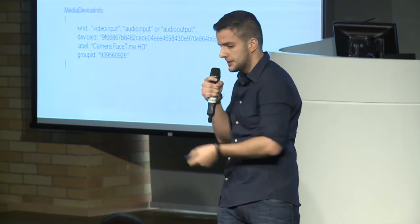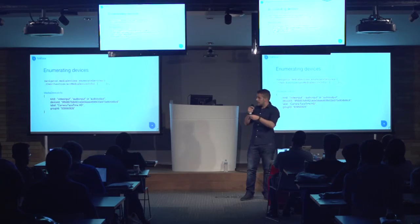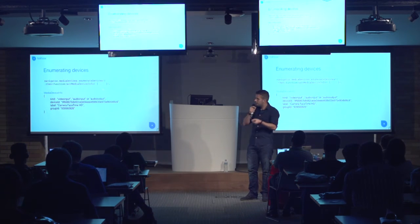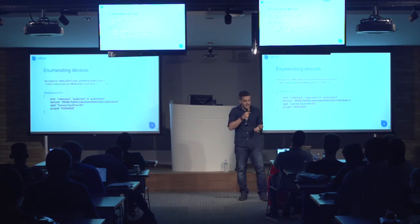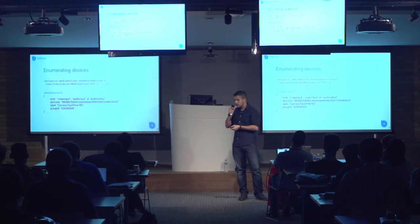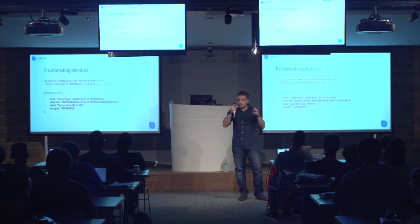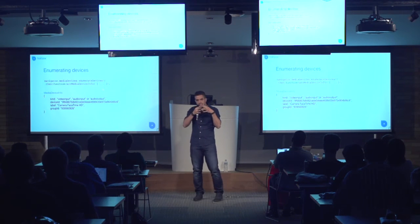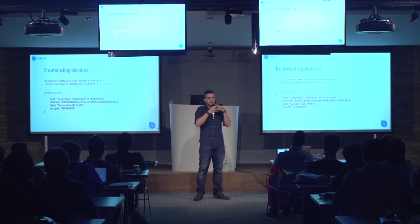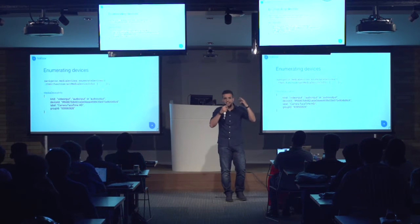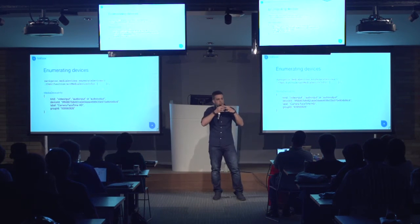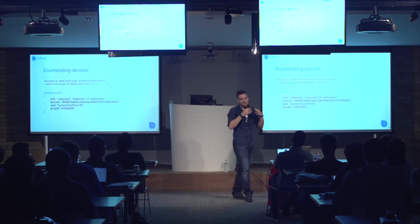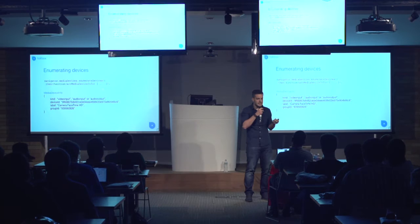The device ID is important because this is the information we'll pass in the getUserMedia call to specify which microphone or camera we want to use. Then we have the label, which is the name of the device — for example, FaceTime Camera. And then we have the group ID. Two devices have the same group ID if they are physically in the same device. For example, a monitor that has a camera and a microphone inside will have both devices sharing the same group ID.